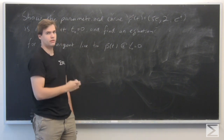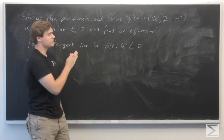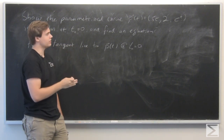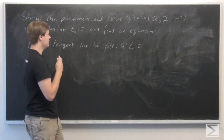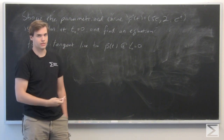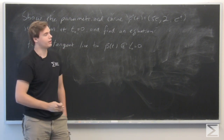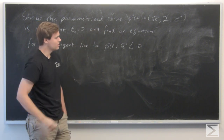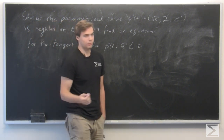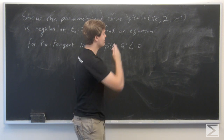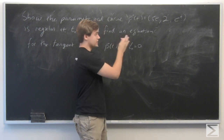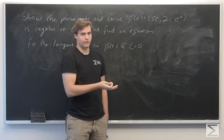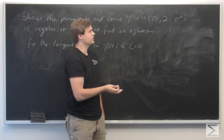We want to show that p of t is regular at t equals 0. And if so, we want to find an equation for the tangent line at that point. Recall that being regular at a point means that the derivative exists and is non-zero — that is, it's not the zero vector at that point.